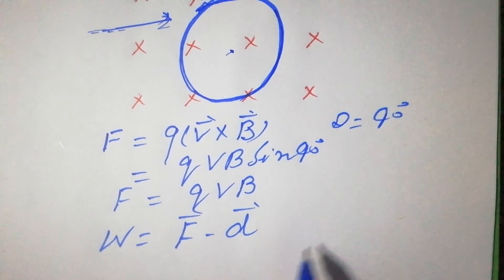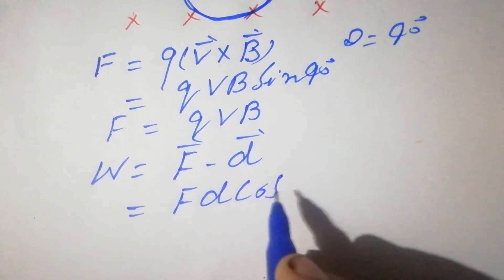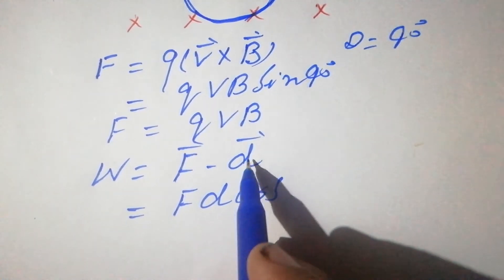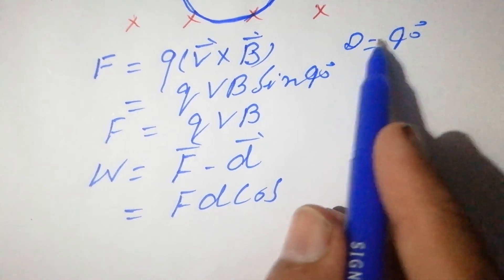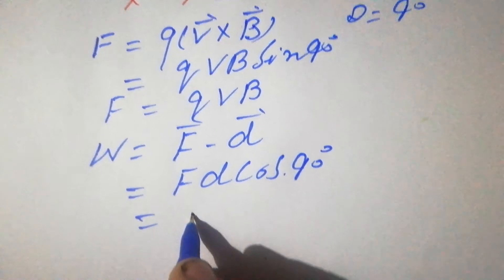The angle between F and D is 90 degrees, so W = FD cos 90°, and cos 90° is 0.